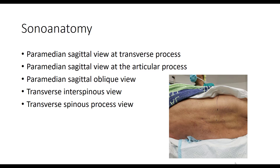It is often helpful to formulate your own routine when performing ultrasound-guided interventions, going through different views in a systematic manner. For ultrasound assessment of the spine and relevant neuraxial elements, I use the following approach. Essentially there are five different views in this routine: three of which are sagittal at different planes from lateral to medial — firstly over the transverse process, then the articular process, and finally with a slight medial tilt to obtain the paramedian sagittal oblique view. Then there are two transverse views: one directly over the spinous process (the transverse spinous process view), and the other over the interspinous space (the transverse interspinous view).